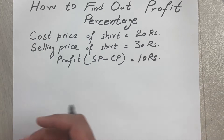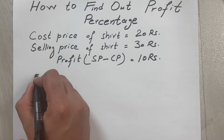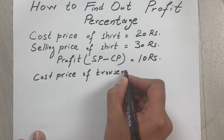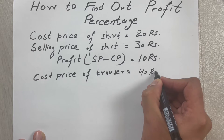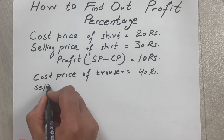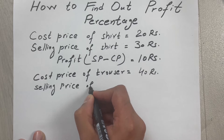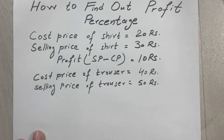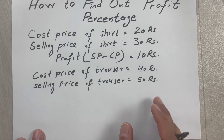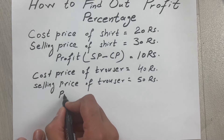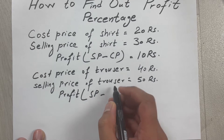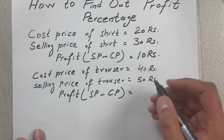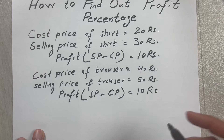Now there is one more deal. This is the first thing — the second deal is: let's say cost price of a trouser is equal to 40 rupees, and the selling price is 50 rupees. Now again we want to calculate how much is the profit in this deal. Profit equals SP minus CP, so selling price is 50, cost price is 40 — 50 minus 40 is again 10 rupees.